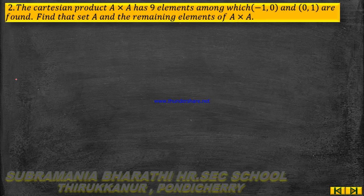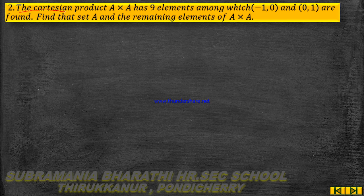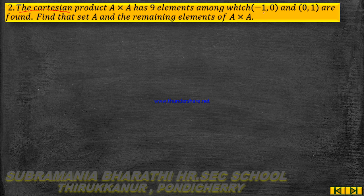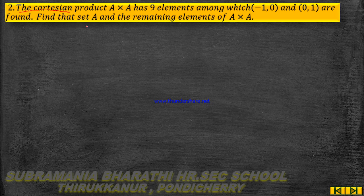Student Unit Exercise, First Chapter, Second Question. The Cartesian product A×A has 9 elements. Among these, 2 elements are given: (-1, 0) and (0, 1). Find the set A and the remaining elements of A×A.